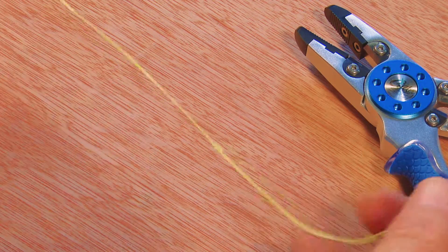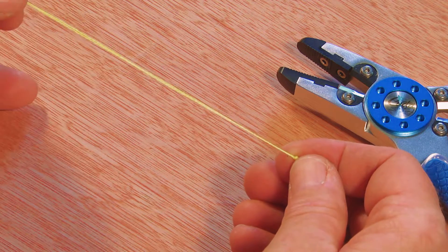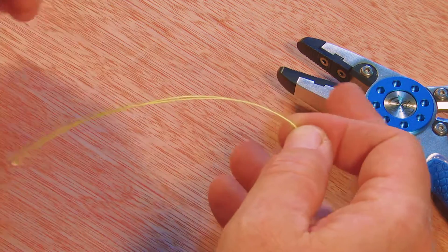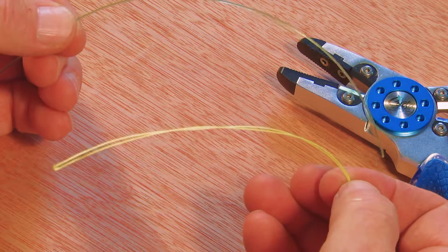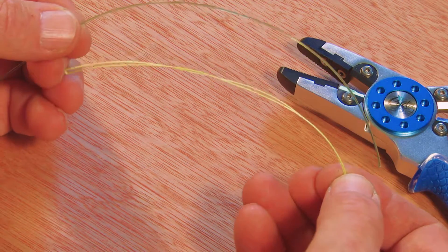There we go. Now I've got essentially a single piece of line here that is getting much closer to the diameter of the monofilament. And I can treat the monofilament as a piece of line and this doubled braid as a piece of line.